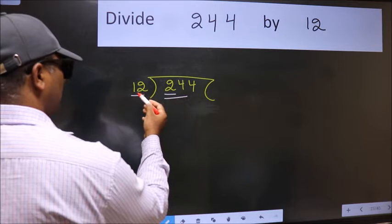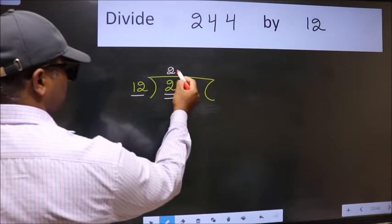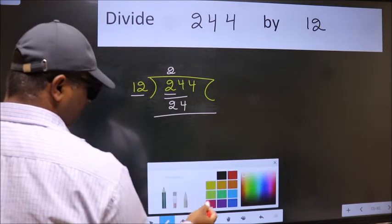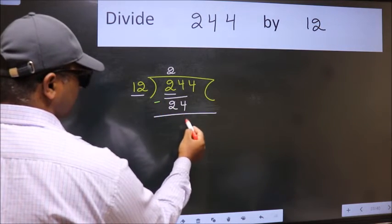When do we get 24 in 12 table? 12 to 24. Now we should subtract. We get 0.